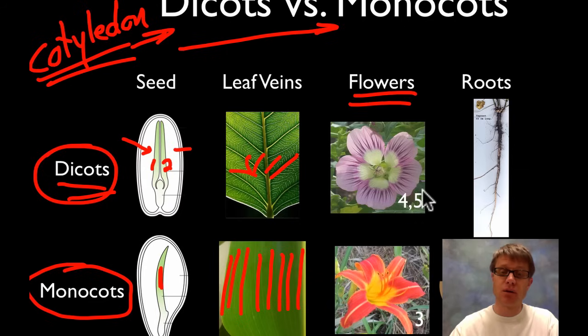If we were to look at their flowers, in a dicot they're going to have 4 to 5 or multiples of 4 to 5 on their petals. So you can see 1, 2, 3, 4, 5. It's probably a dicot. Whereas if it's a monocot they're going to be in multiples of 3. So you can see that this one has 6 petals, and so it's going to be a monocot.